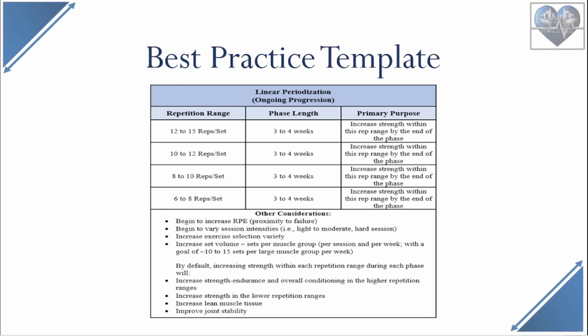Other important things to consider within the overall context of a periodized program are to have some sessions where working sets are taken a little closer to muscle failure, such as an 8 on a 1-10 RPE scale. Begin to vary session intensities so some sessions are harder and some are purposely light to moderate. Increase variety of exercise selection. Increase how many sets are performed per large muscle group per session and per week, with the goal of performing at least 10 sets per legs, back, chest, and shoulders per week — preferably in the 10-15 or 10-20 sets per week range.